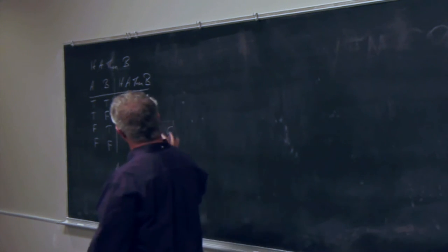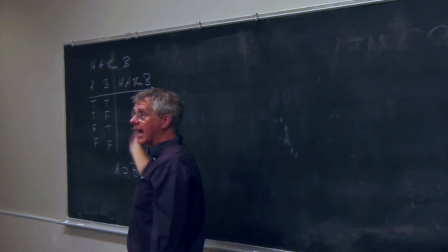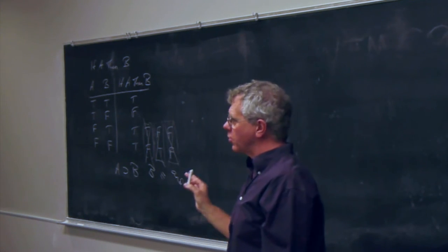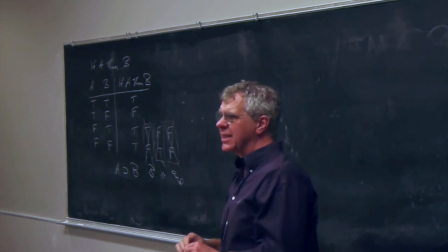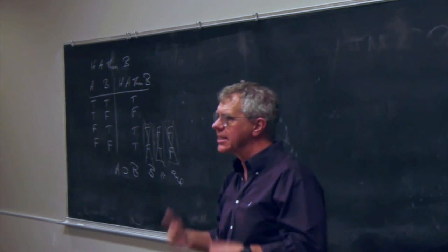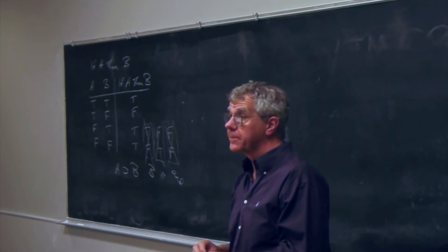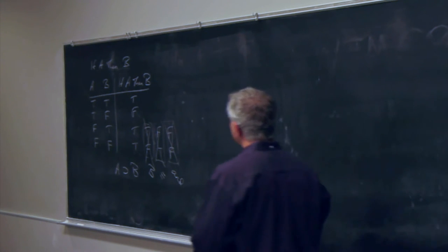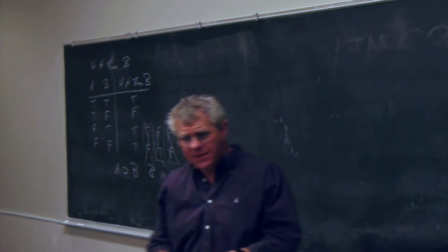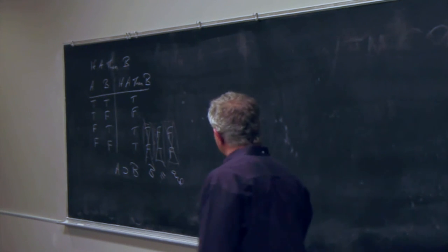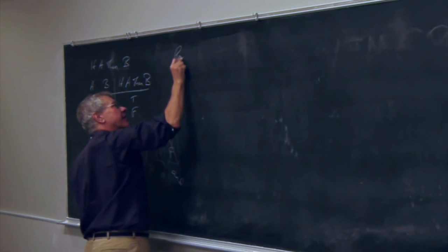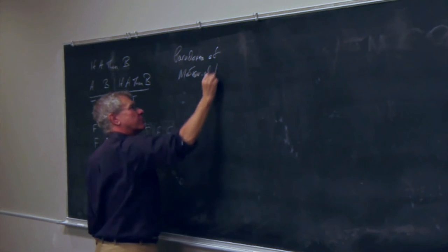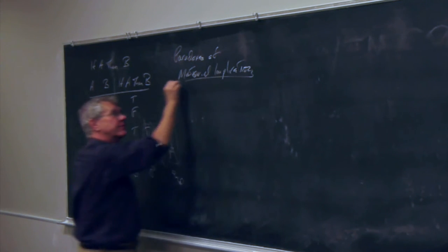You might think that if-then in English really does mean material implication. Some philosophers still defend that. But most people think it's not quite right — the material conditional expresses a very weak connection between A and B. It's really just saying it's not the case that A and not-B. There isn't really much implication between A and B.